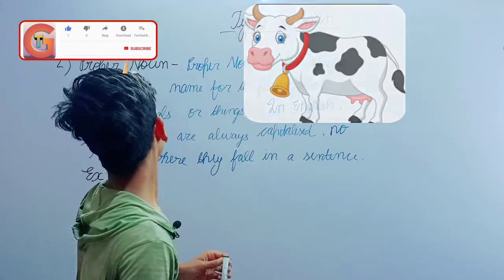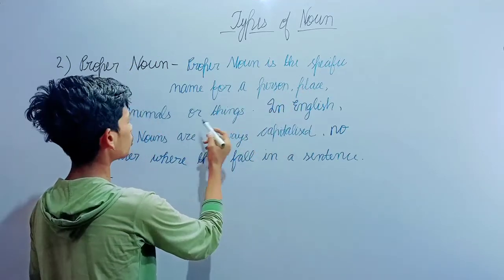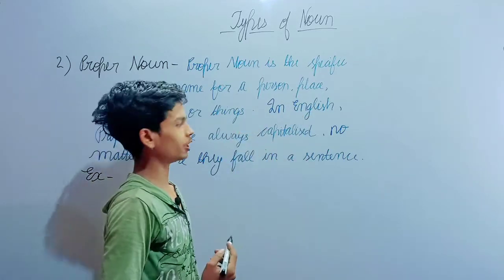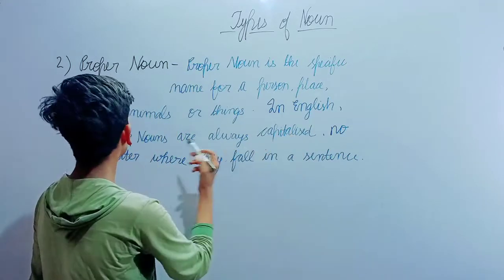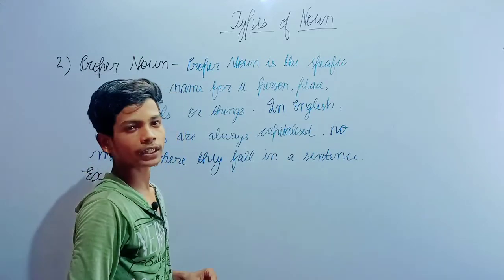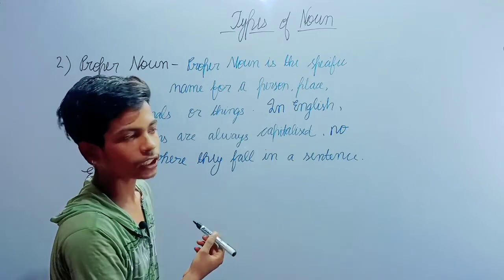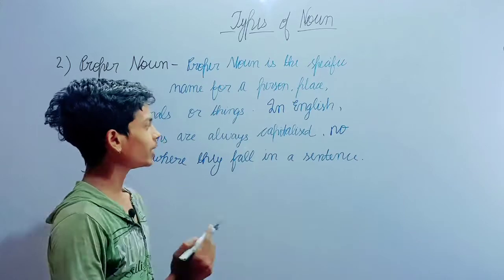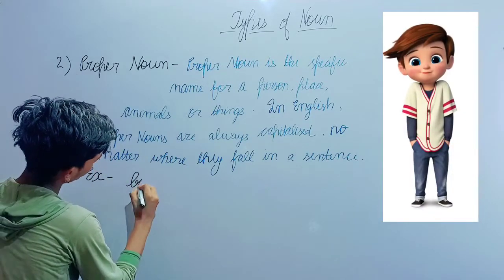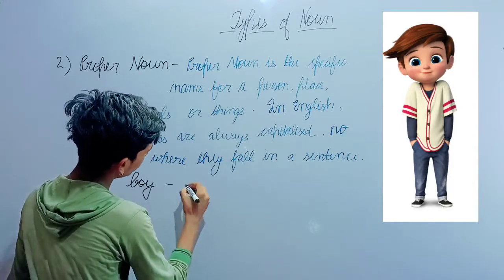Next, the second type is proper noun. A proper noun is the specific name for a person, place, animal, or thing. Proper nouns refer to specific humans, places, things, or people that have a particular name. In English, proper nouns are always capitalized, no matter where they fall in a sentence.